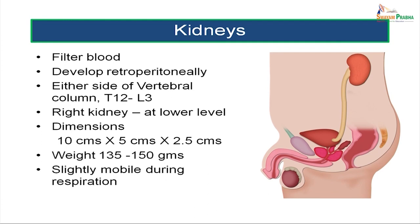The kidneys mainly function in filtering the blood, removing excess water and toxic products of protein metabolism, and adding back into circulation the useful electrolytes and salts. The kidneys develop retroperitoneally and are located on either side of the vertebral column in relation to thoracic vertebra 12 till lumbar vertebra 3. The right kidney is slightly lower compared to the left. The kidneys measure on average 10 centimeters in length, 5 centimeters in breadth, and 2.5 centimeters in thickness, weighing approximately 135 to 150 grams. The kidneys are slightly mobile during respiration, moving in a superior-inferior direction during the various phases of respiration.